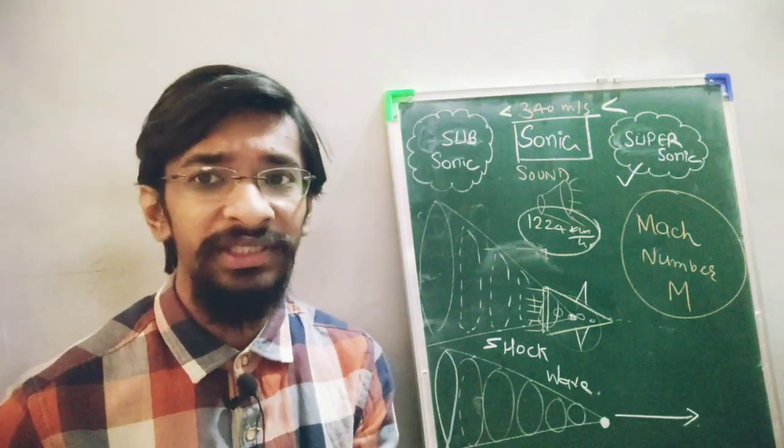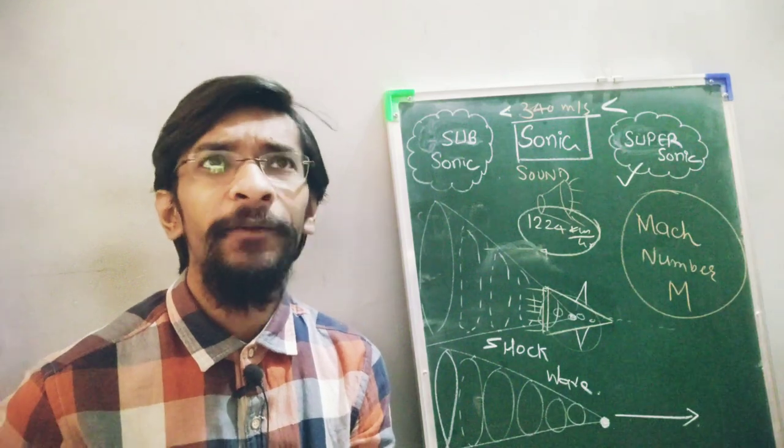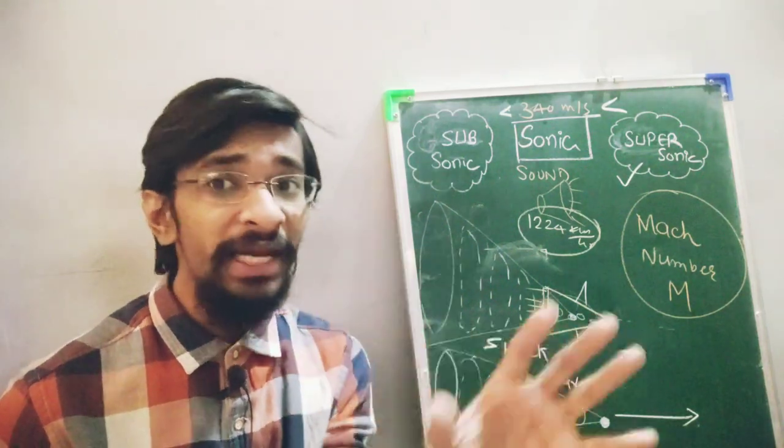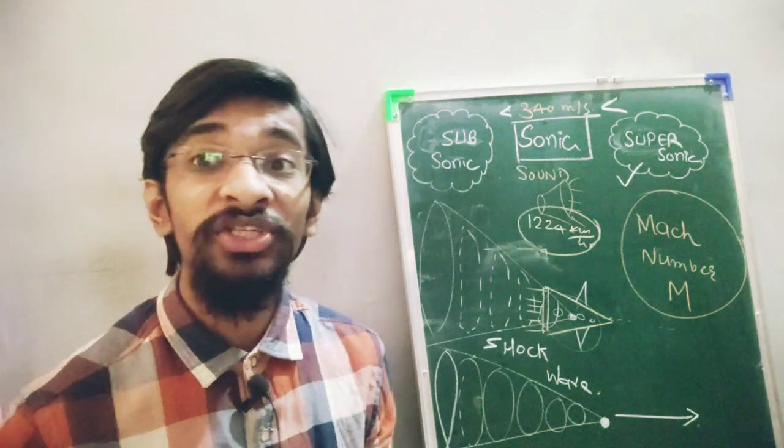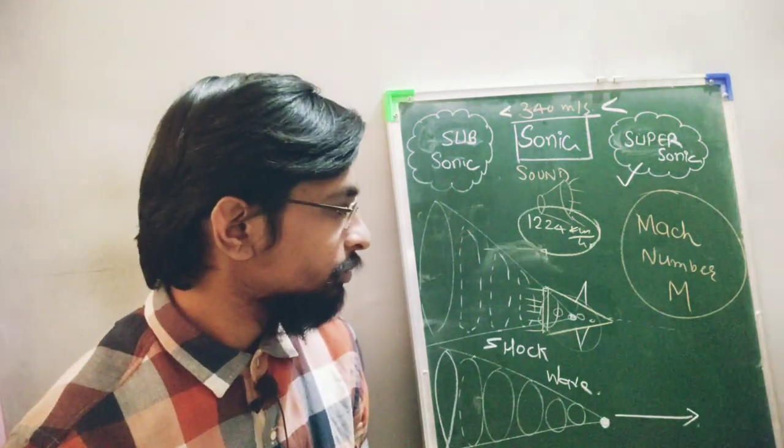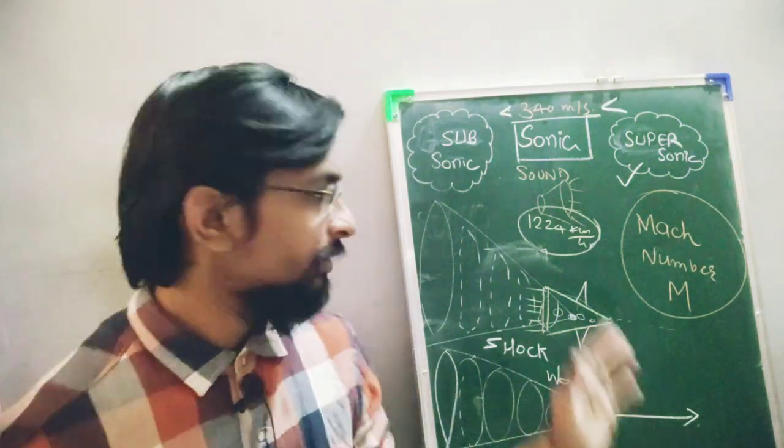The energy is losing of the damped oscillator. In the same manner, this Mach number gives us an idea at what speed that particular object is moving. If the Mach number is one, now let me just pause it.